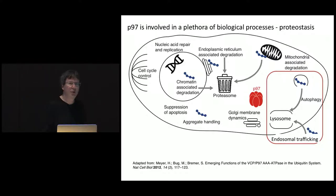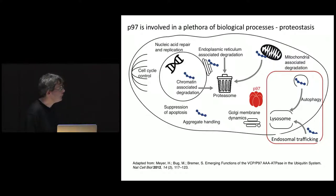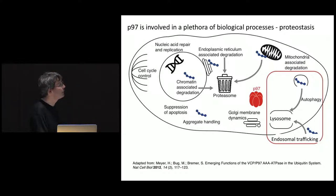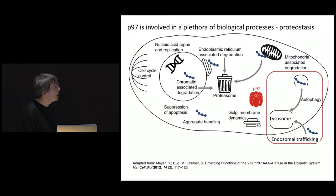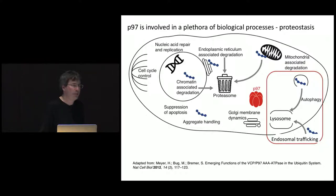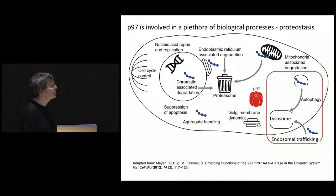P97 is a very important molecule involved in a plethora of different biological processes, grouped under the heading of proteostasis — P97 is involved in ensuring the protein health of the cell. What P97 does — shown here in red with the proteasome in the middle — is take proteins that are past their prime, have carried out their biological function, or are diseased or mutated, and transfer them to the proteasome for degradation.